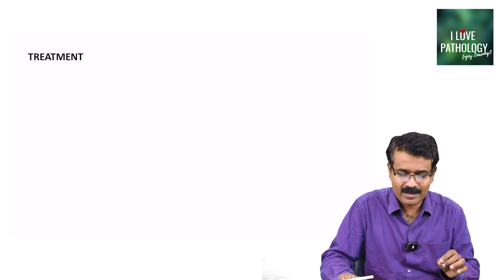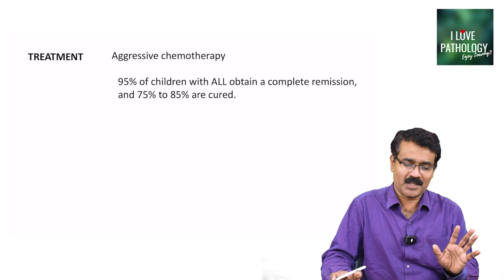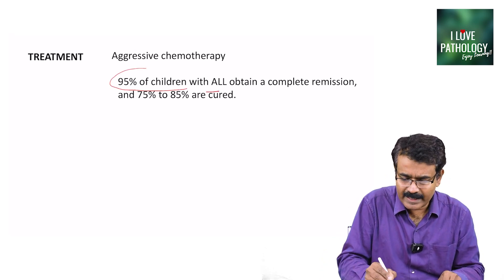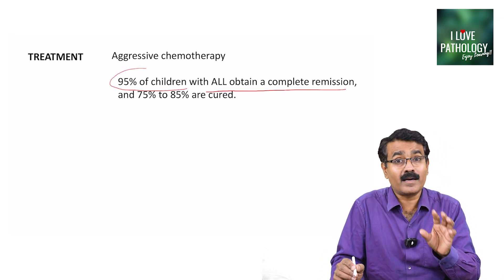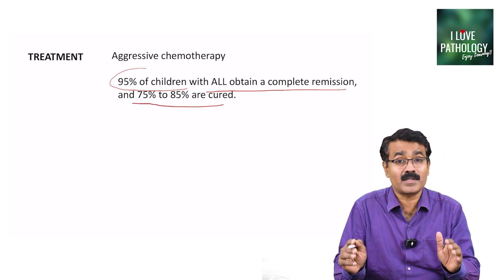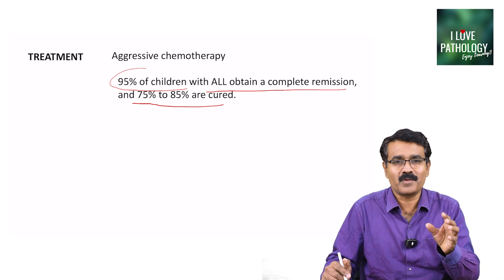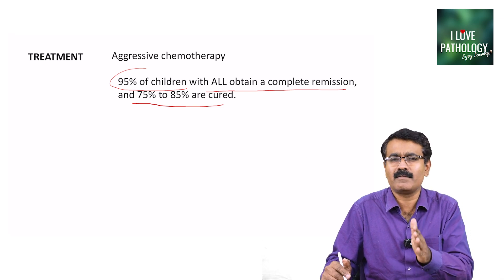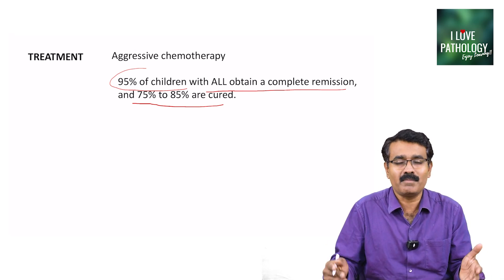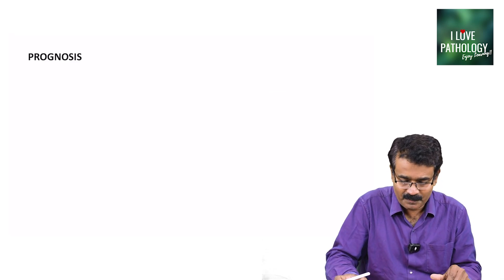How do you treat ALL? Aggressive chemotherapy is often curative — 95% of children with ALL obtain a complete remission, and 75 to 85% of children are actually cured. That is the importance of knowing whether you are dealing with ALL or AML, because AML is not curable whereas ALL can be cured in 75 to 85% of cases.